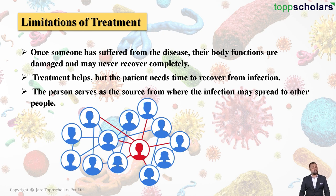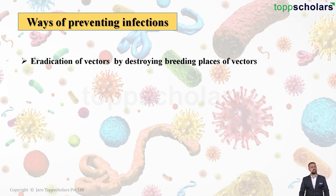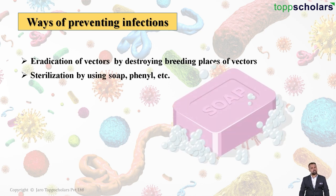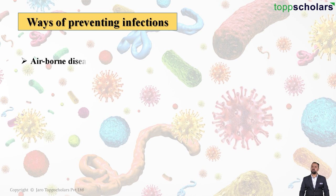Let us talk about some ways and methods for preventing infectious diseases. Eradication of vectors is very useful — it can be done by destroying the breeding places of vectors. Sterilization using soap, phenyl, and other disinfectants is also very effective. We also need to educate people about infectious diseases, how they spread, and how to treat them.